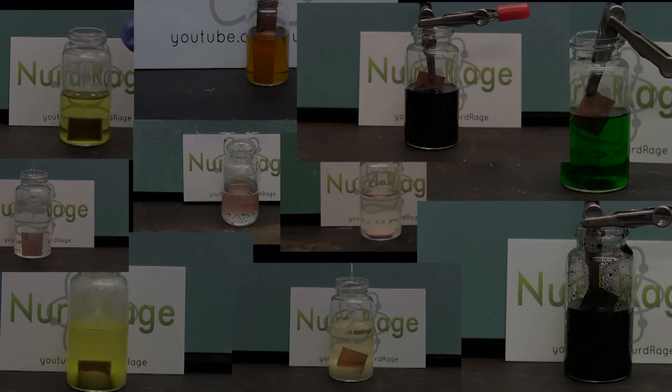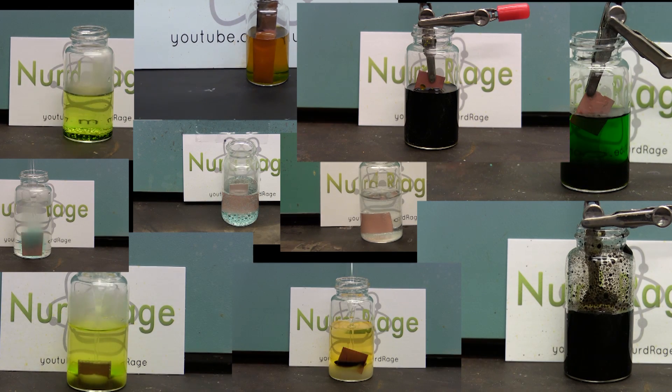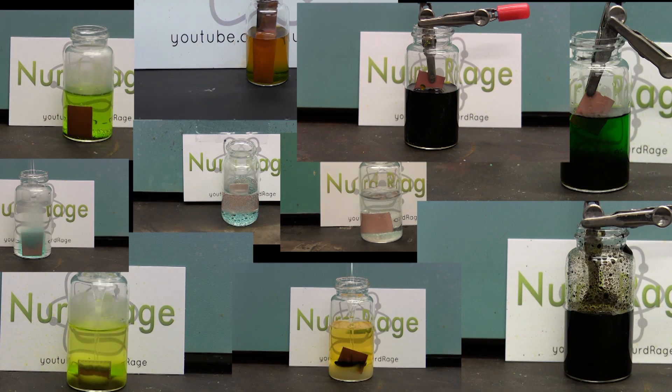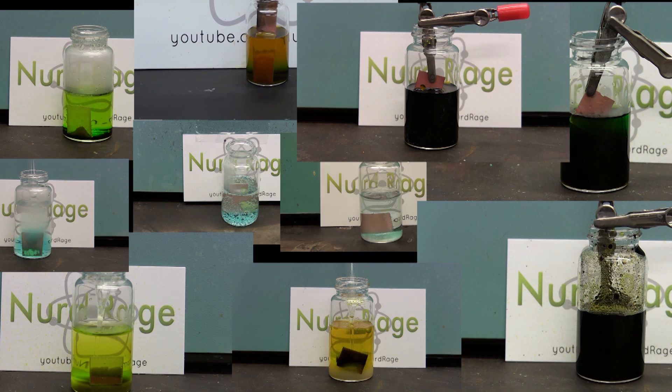So there you have it. 10 ways to etch copper printed circuit boards. Now after you've depleted your etchants you'll eventually end up with copper containing chemical waste that's horrible for the environment and likely illegal where you live to simply dump down the sink. But I'll show methods of recycling, reprocessing and disposal in a later video. Thanks for watching.